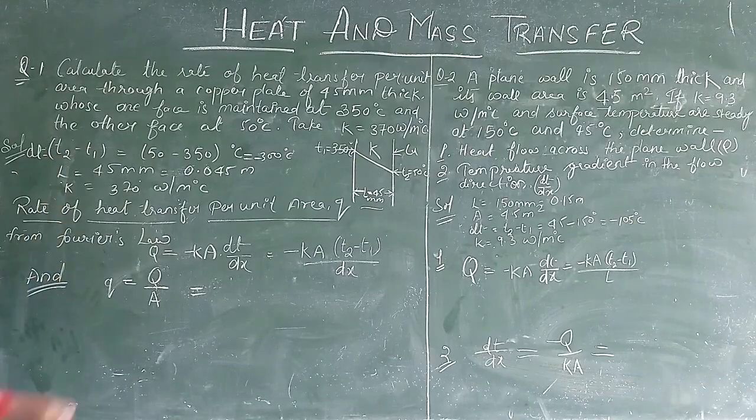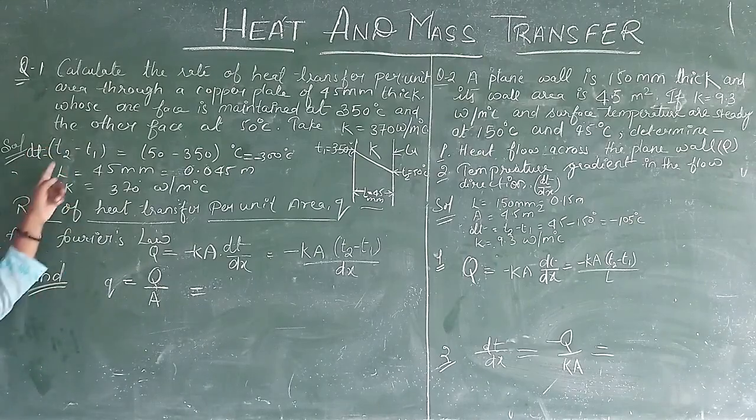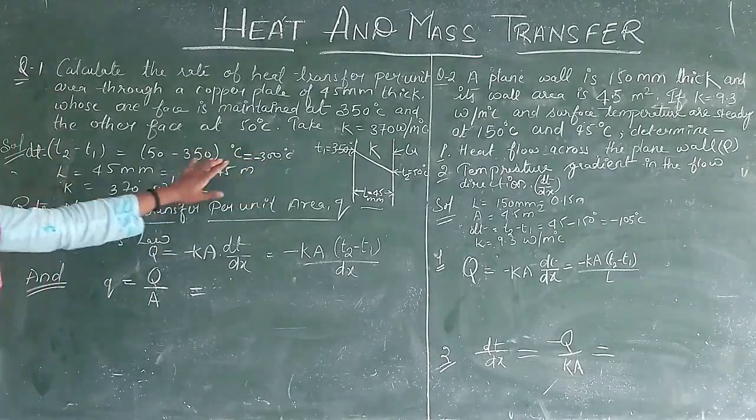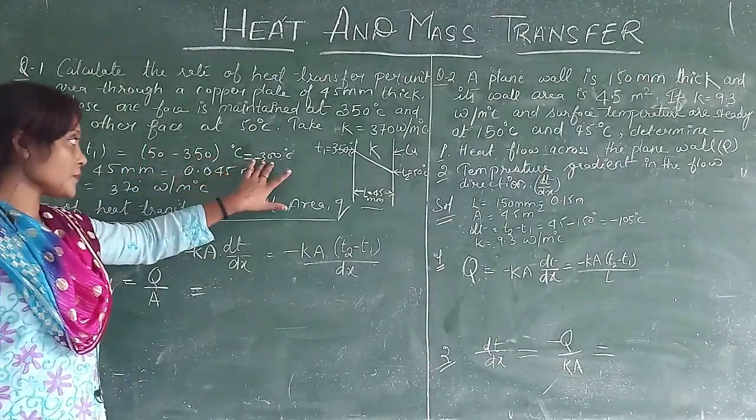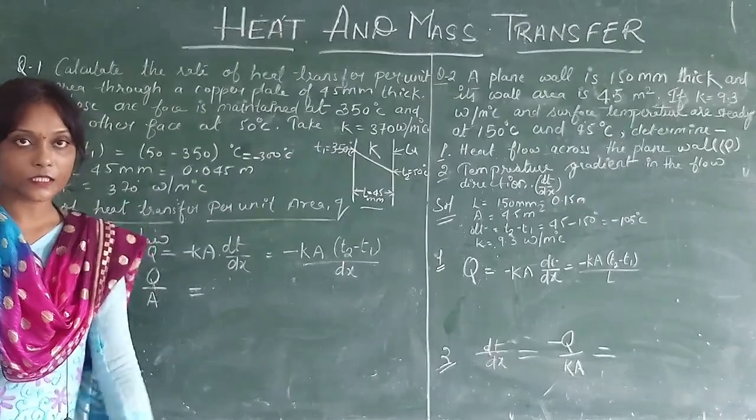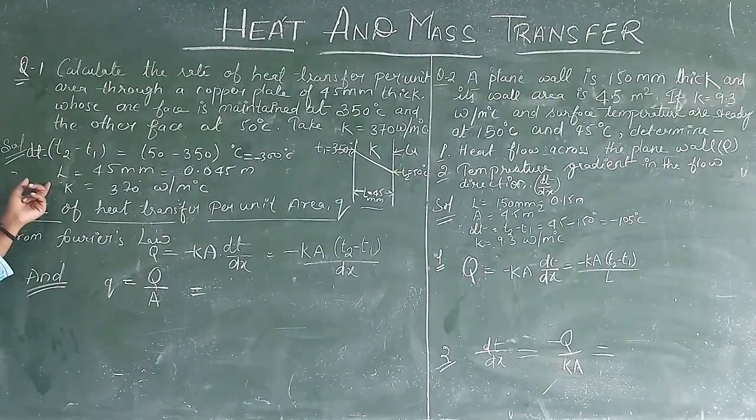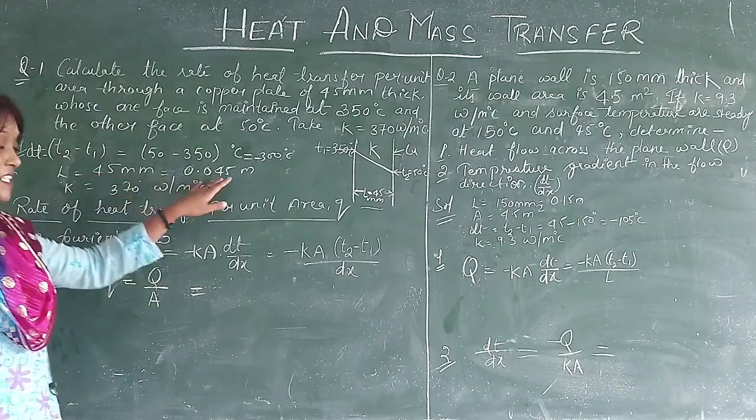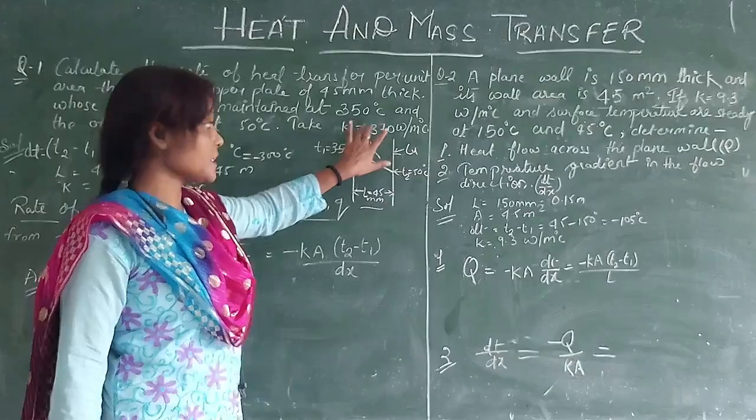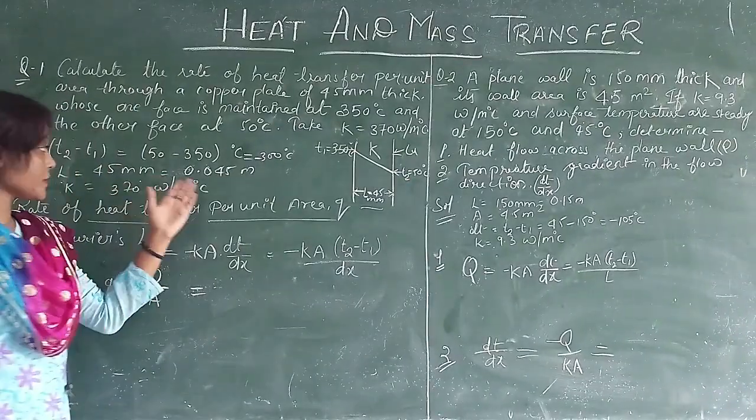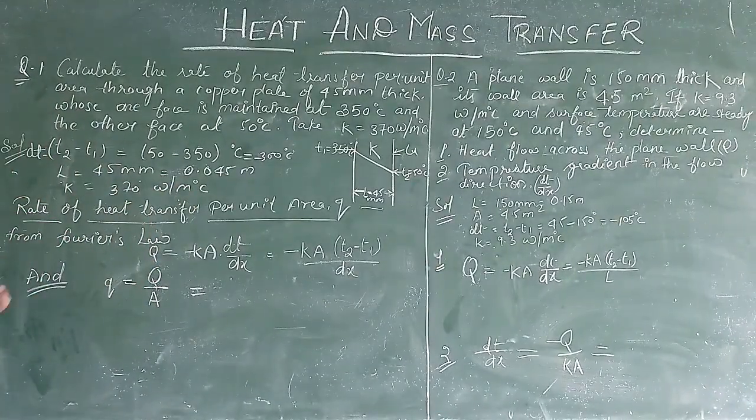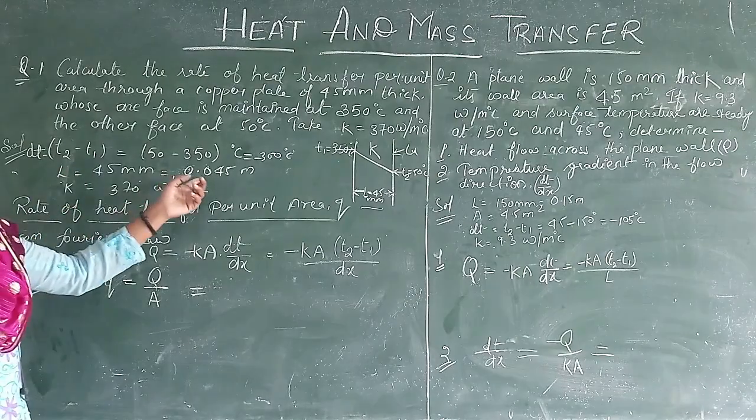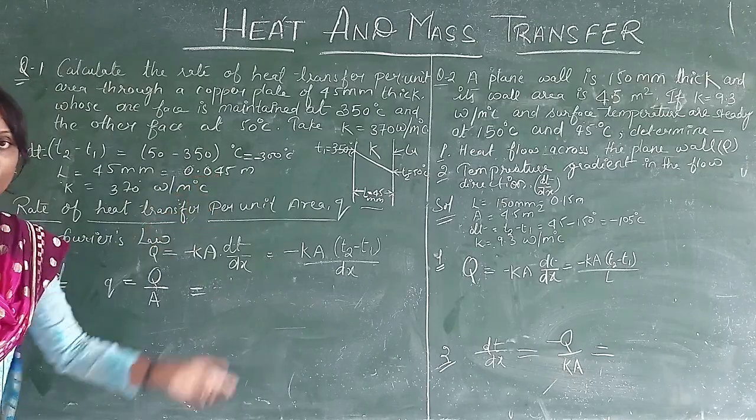dt is equal to T2 minus T1, that is 350 minus 50 degree centigrade. And when we subtract it, the temperature difference is 300 degree centigrade. The length or distance is 45 mm. Now, because the thermal conductivity is per meter, we have to convert this mm. So here we have to convert this to 0.045 meters.